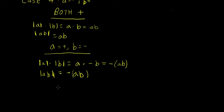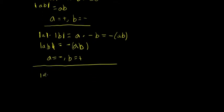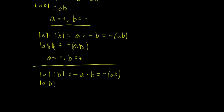Case three: A is negative and B is positive. The absolute value of A times the absolute value of B — when A is negative, the absolute value of A equals negative A, and the absolute value of B is just B itself. So we get negative AB. For the left side, the absolute value of AB — a negative times a positive is a negative, and the absolute value of a negative number is its additive inverse, so we again get negative AB. The statement holds when A is negative and B is positive.